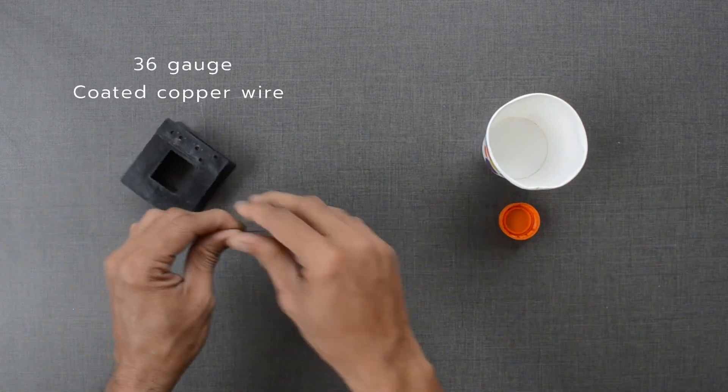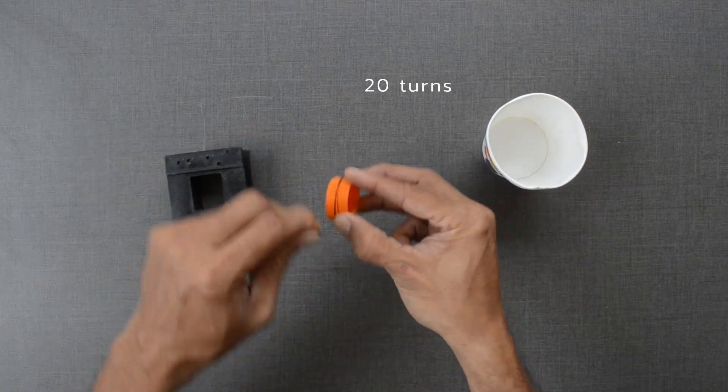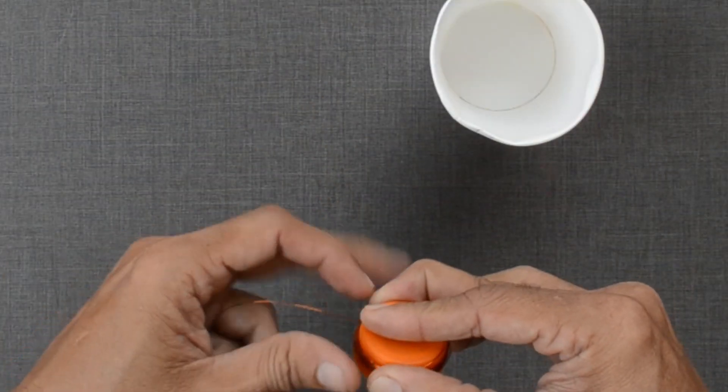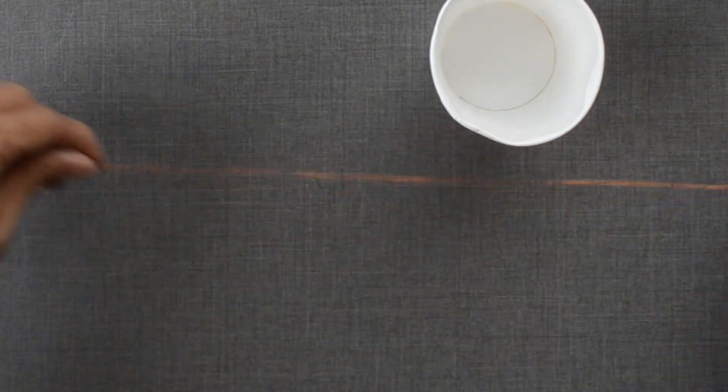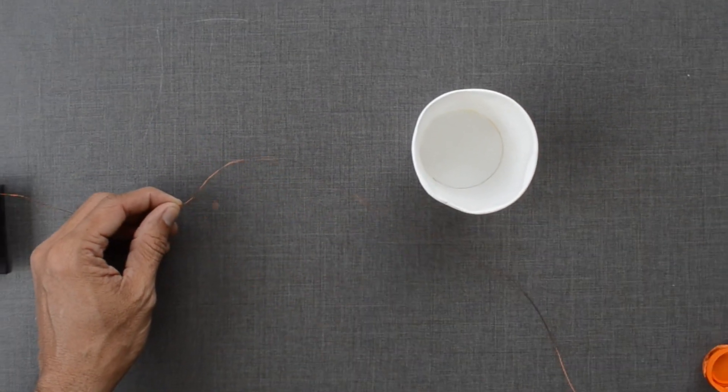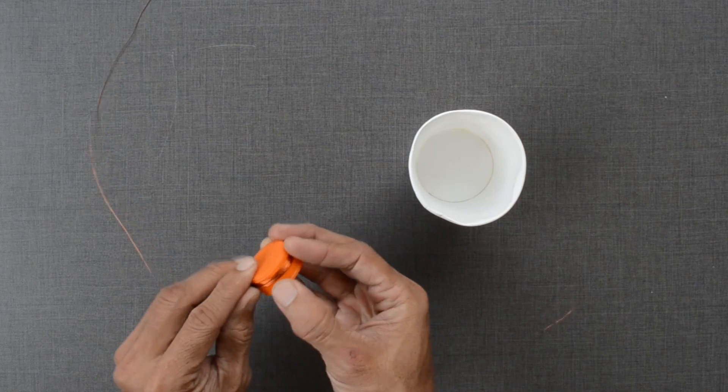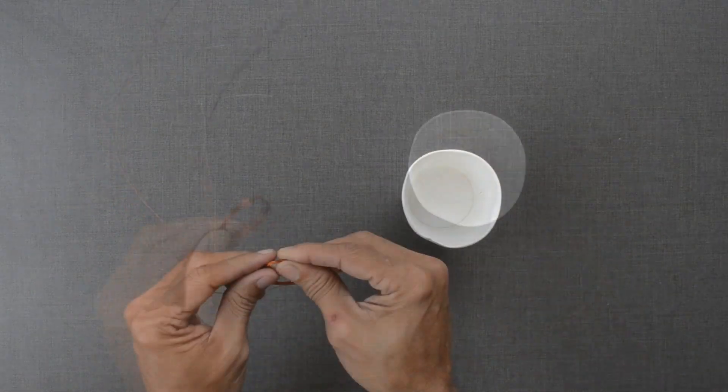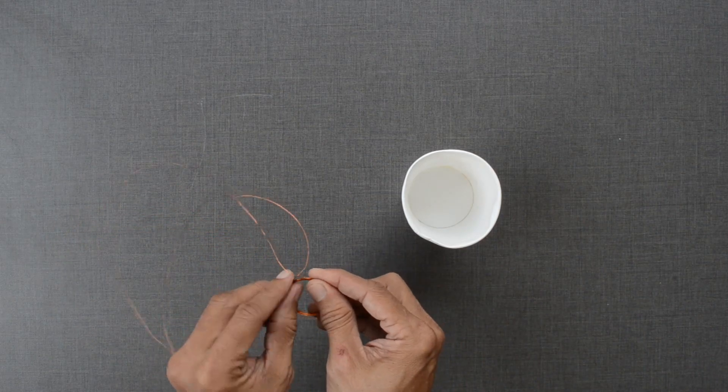Let us take this 36 gauge coated copper wire and make a coil with around 20 turns. Almost 1 foot of wire is kept loose at both ends. We will wrap some wire around as well to keep all the loops in place.